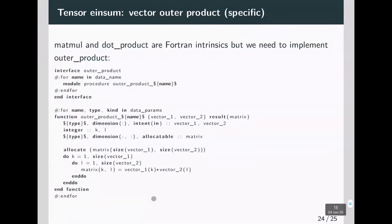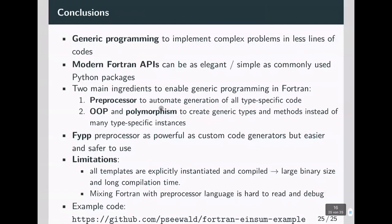The Fortran standard already provides matrix multiplication and dot product, but the outer product we implement ourselves. Here we do function overloading by creating an interface and doing a FYPP loop to have all instances in this interface. And then we implement it in a very basic way using FYPP templates.